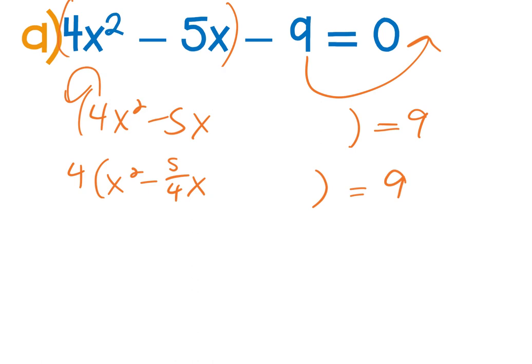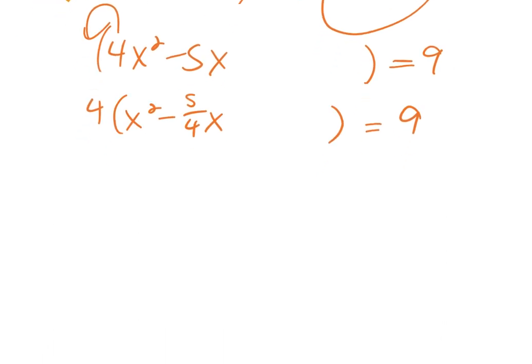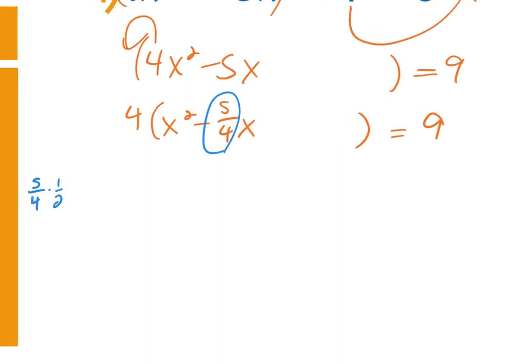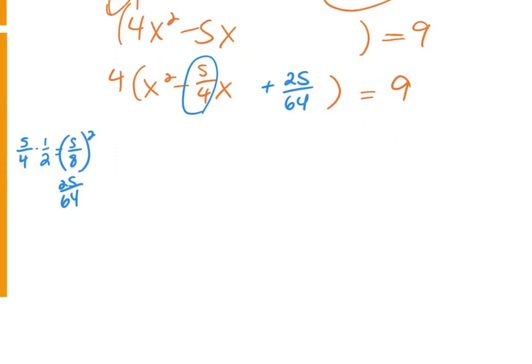When we did completing the square with parabolas we kept everything on one side, but since we're solving here, we can divide both sides by 4 and avoid multiplying the completing-the-square term before adding it to the other side. I'll show both methods. Keeping the 4 factored out: take 5/4, divide by 2 (or multiply by 1/2) to get 5/8, then square it to get 25/64, and add it to both sides — but before adding to the right side, multiply by the 4 that was factored out.